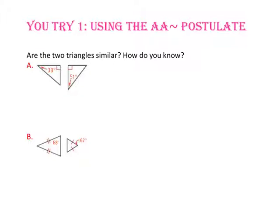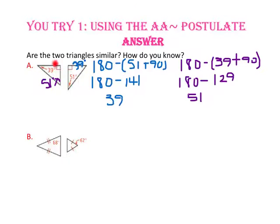Pause the video and try number 1. Are the two triangles similar? How do you know? Let's take a look at the angles we know the measures of. This angle and this angle are both 90 degrees. This is 39 degrees and this is 51. Let's find the two missing angles and compare them. Since the two angles are 90 degrees and these two angles are both 39 degrees, we didn't need to find the missing angle. We know the two triangles are similar by the angle-angle similarity postulate.